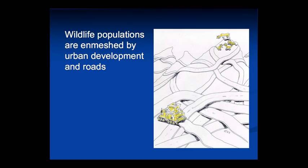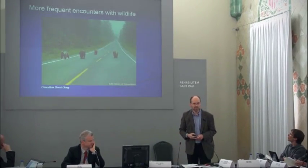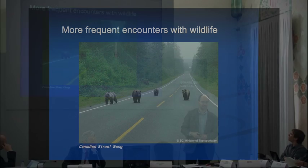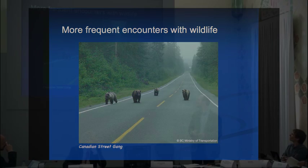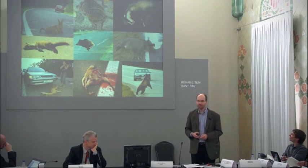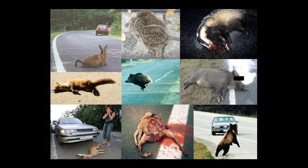As a result, wildlife populations are increasingly enmeshed by roads, railway lines, and urban areas. We have more frequent encounters with wildlife — here's an example from Canada showing a Canadian street gang. Of course, this also results in a huge loss of wildlife through traffic mortality.